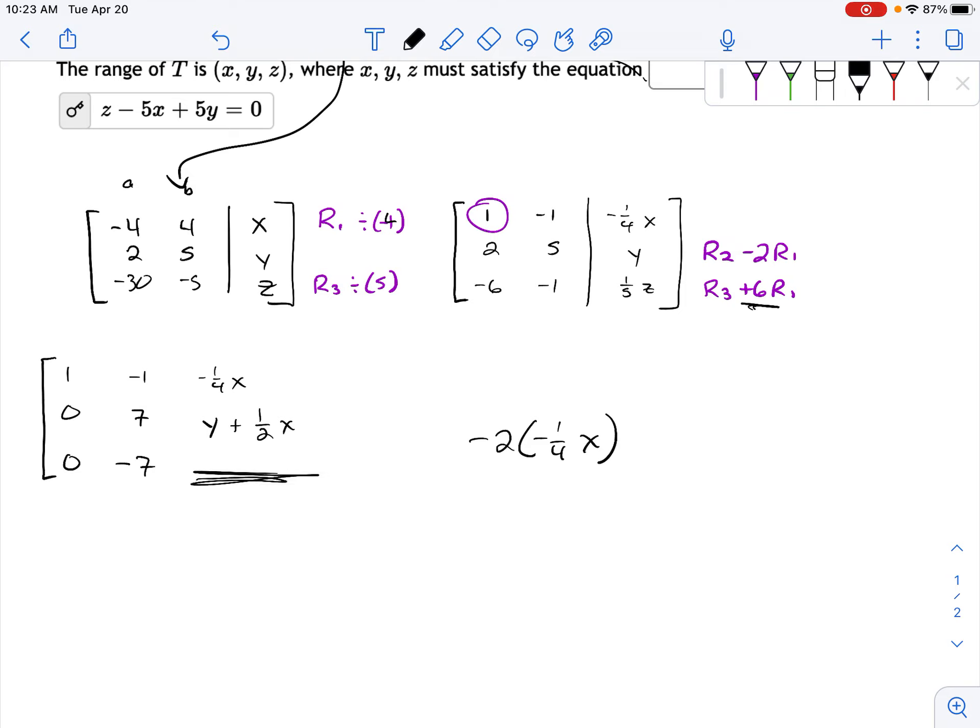And then this other piece over here is going to be negative, or no, it's going to be one-fifth z plus six times negative one-fourth x. So that's one-fifth z plus, or no, minus three-halves x.